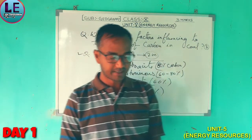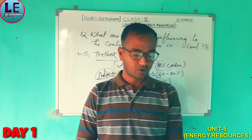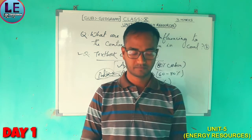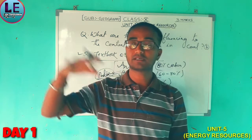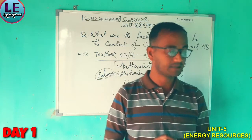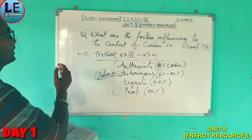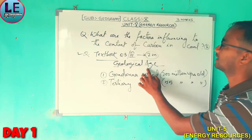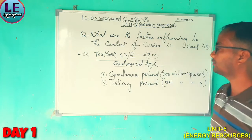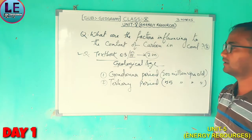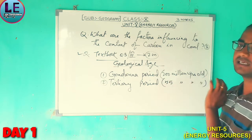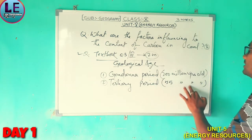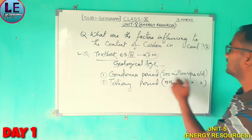In page 42, in the second paragraph: almost all the coal deposits belong to Gondwana and tertiary periods of geological past. The Gondwana deposits are around 200 million years old, while the tertiary deposits are around 55 million years old.